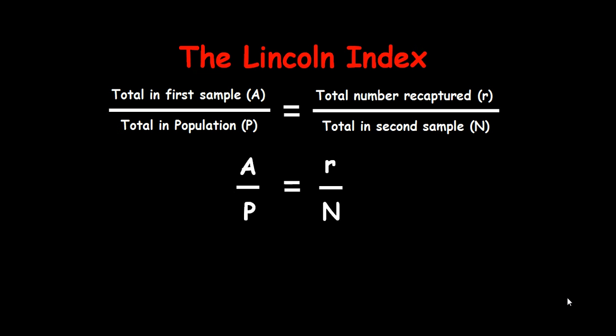Let's look at it a little bit more formally now. This formula is known as the Lincoln Index. And basically what we're doing is we're assuming that the ratio of the number that you marked in the first sample, divided by the whole population, that's the bit we don't know, is the same ratio as the total number that we recaptured in the second sample, divided by the total size of the second sample.